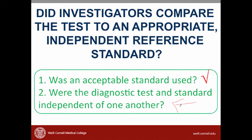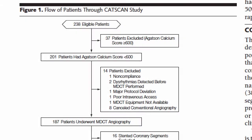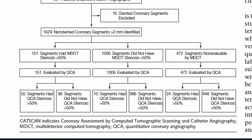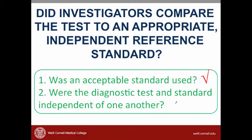The next question is: were the diagnostic test and standard done independent of one another? This is important because we want to know whether the new test can replace the gold standard or be used instead of it — not whether it should be done in addition to or before or after. If we go to figure one, we can see that patients had both the multi-detector CT and the angiogram done. So yes, both tests were done independently. We can give that question a check mark.